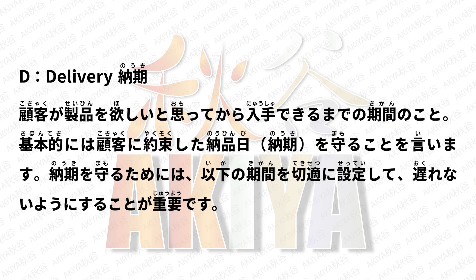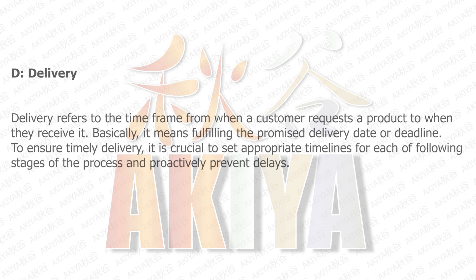D — Delivery (納期): Delivery refers to the time frame from when a customer requests a product to when they receive it. Basically, it means fulfilling the promised delivery date or deadline. To ensure timely delivery, it is crucial to set appropriate timelines for each of the following stages of the process and proactively prevent delays.